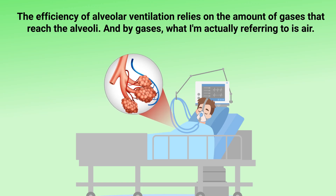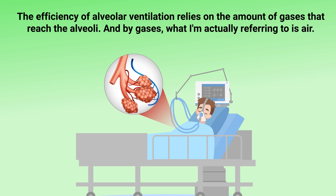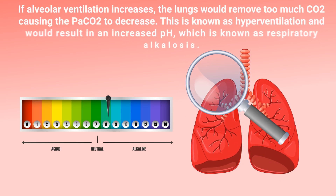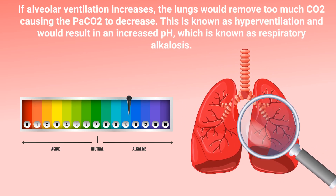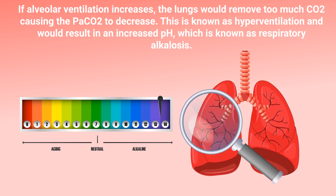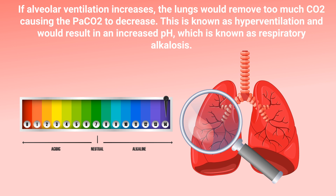The efficiency of alveolar ventilation relies on the amount of gases — that is, air — that reach the alveoli. For a quick example: if alveolar ventilation increases, the lungs would remove too much CO2, causing the PaCO2 to decrease.